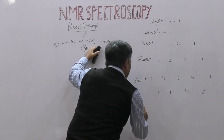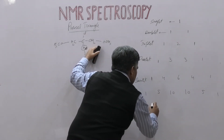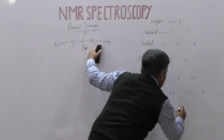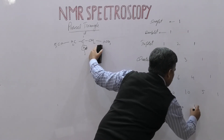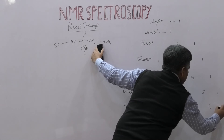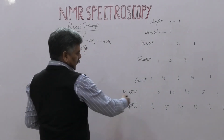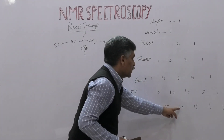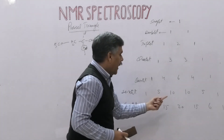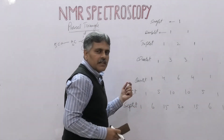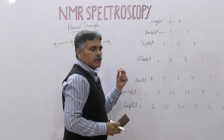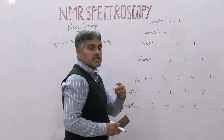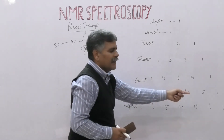For the septet, from the sextet row we derive: 1, then 1+5=6, then 5+10=15, then 10+10=20, then 10+5=15, then 5+1=6, then 1 — giving the ratio 1:6:15:20:15:6:1. This is the case for a septet where the central line has the highest intensity. In the proton NMR spectrum when one hydrogen shows spin-spin splitting with six hydrogens, the intensity of the terminal lines is very small.